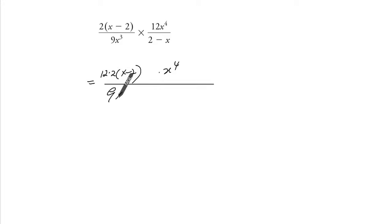And here we get 9x cubed, and if you factor out a negative from there, we get x minus 2. Okay, so 12 and 9 share a common factor of 3, so you get 4 and 3 when you reduce.